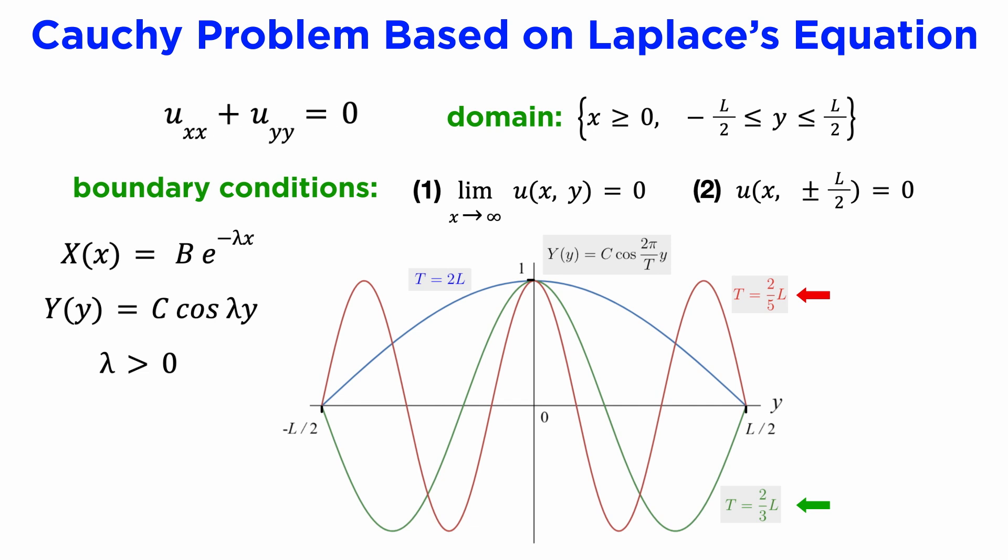However, we can also notice that any odd integer multiple of this fundamental frequency will also satisfy the same condition, so we can consider dividing this period of 2L by an odd integer, 2n plus 1.